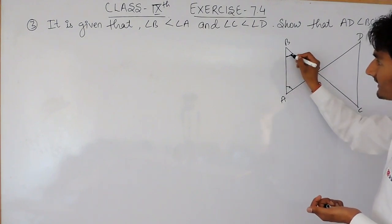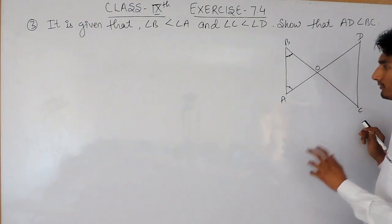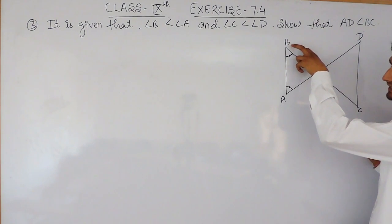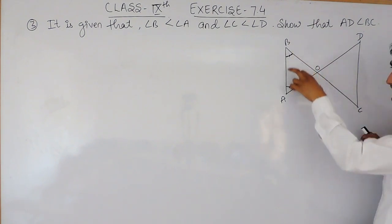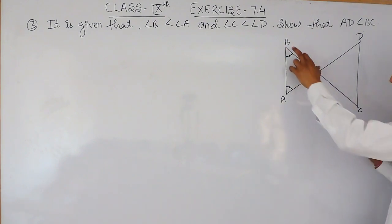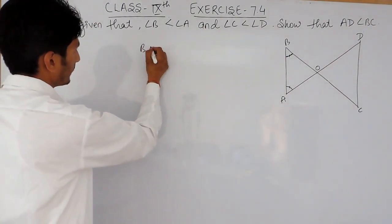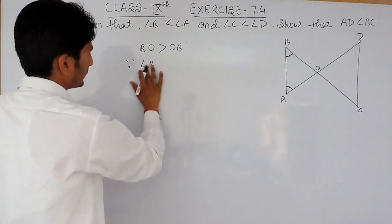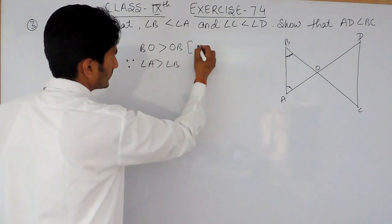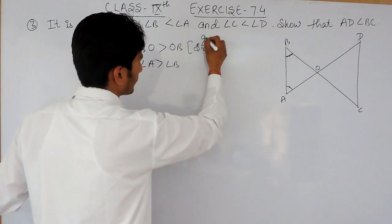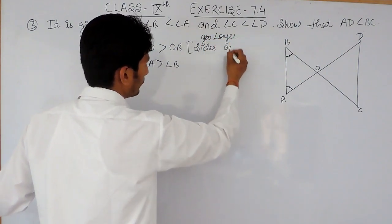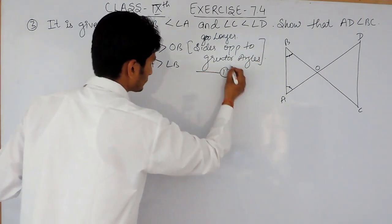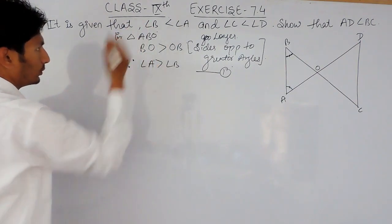So obviously angle A will be greater than angle B, and according to the property, the side opposite to the greater angle will be longer than the side opposite to the smaller angle. Therefore, BO will be greater than OA, because angle A is greater than angle B. This is the property of longer sides opposite to greater angles. This is our first equation, derived from triangle ABO.